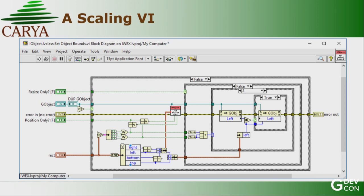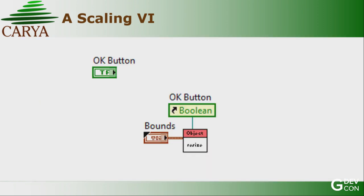There's more wrapping around the VI - it sets the size as well as the position optionally. The bottom line is we have a VI that scales everything. You can use this as a standalone or you can use the library. It's a good thing to know when doing front panel scaling.